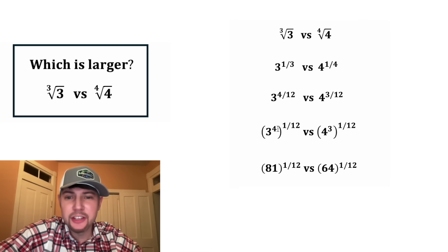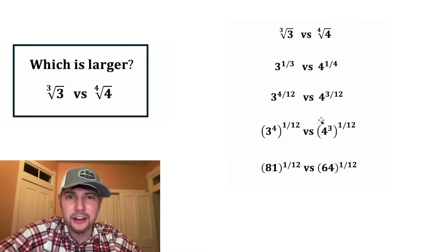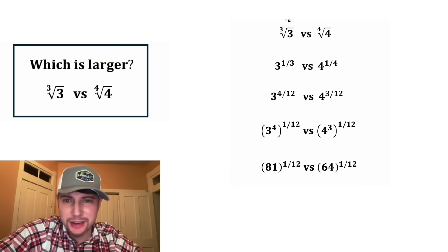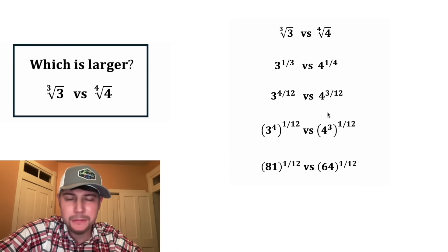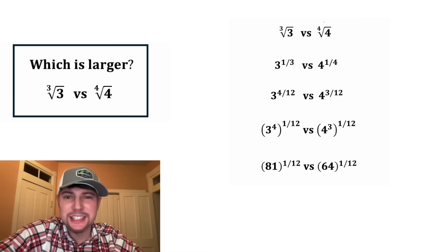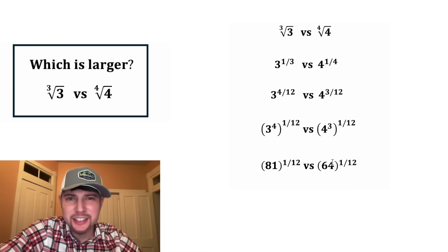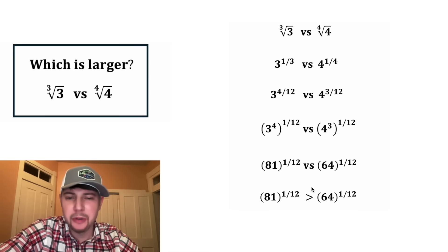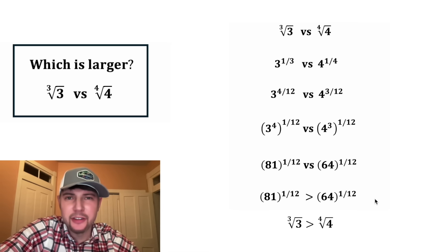And going through all these steps, we've not changed the value of these at all. So 81 to the 1 12th power is the exact same thing as the cube root of 3, and 64 to the 1 12th power is the exact same thing as the 4th root of 4. Since 81 is greater than 64, 81 to the 1 12th will be greater than 64 to the 1 12th. So the cube root of 3 is greater than the 4th root of 4.